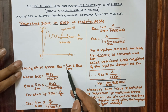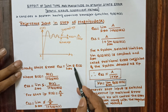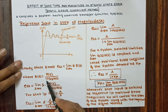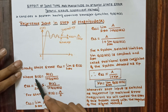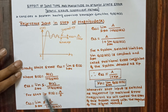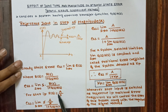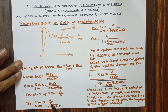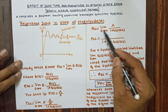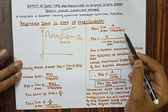We know that steady state error ESS is equal to limit s tends to 0, s into E(s), where E(s) is equal to R(s) divided by 1 plus G(s) into H(s). By substituting this E(s) value in the above equation we get ESS equal to limit s tends to 0, s into R(s) divided by 1 plus G(s) into H(s). For step input R(s) equals A divided by s; by canceling s we get ESS equal to limit s tends to 0, A divided by 1 plus G(s) into H(s).